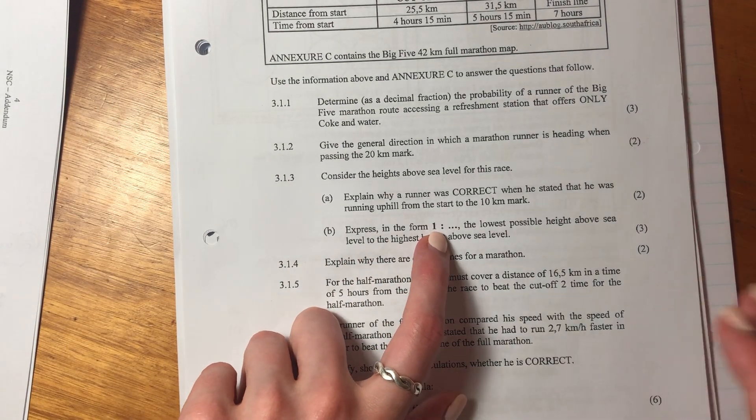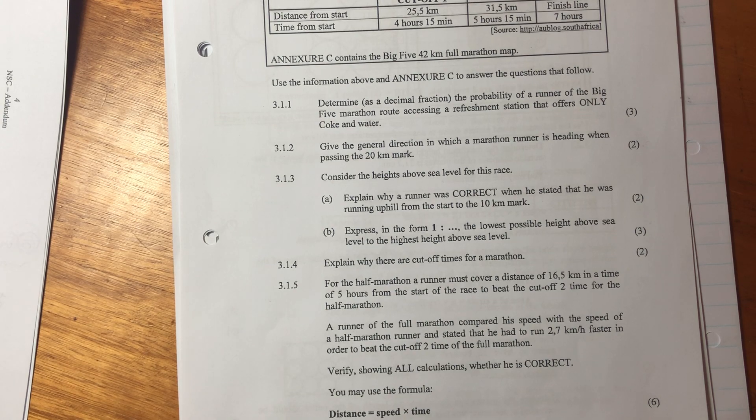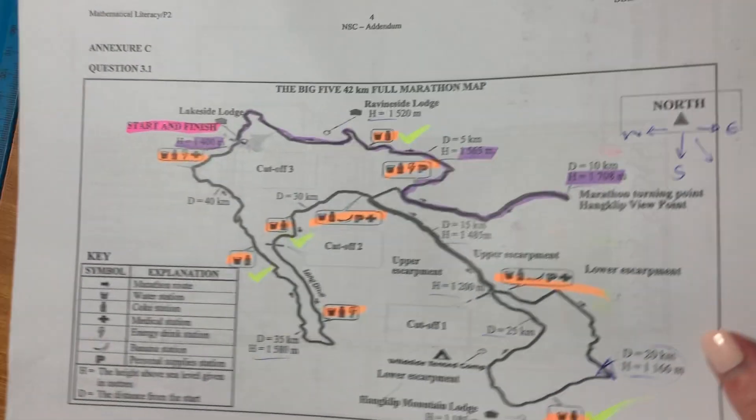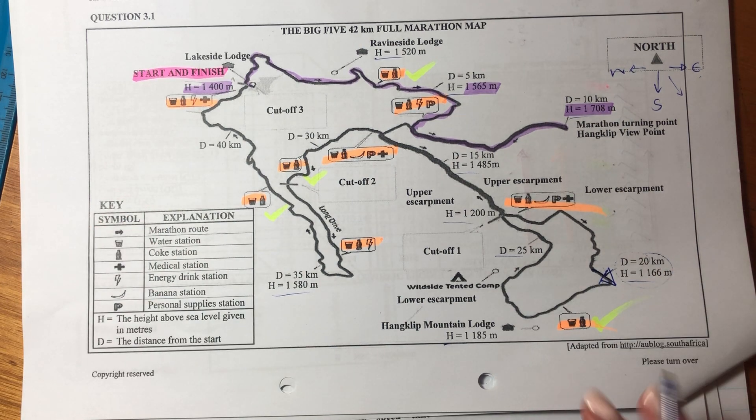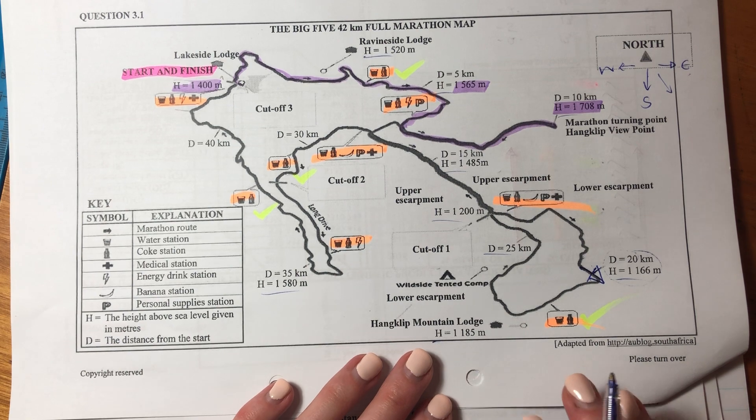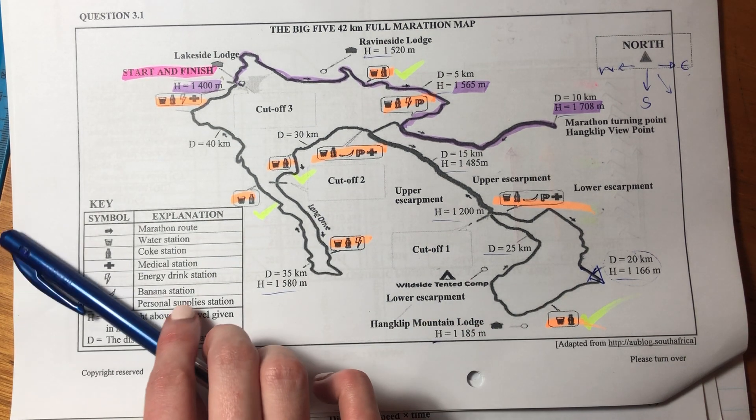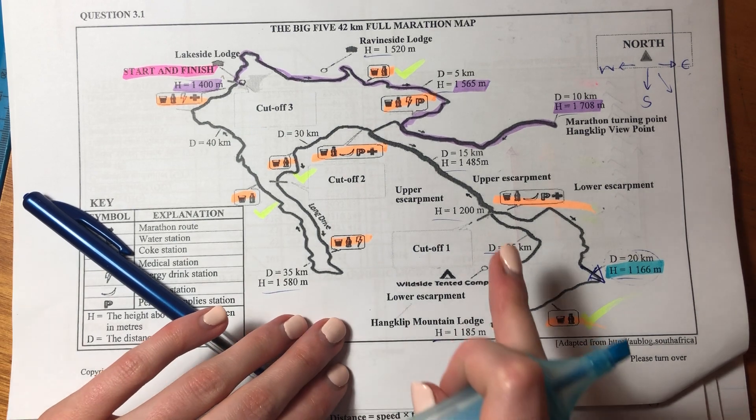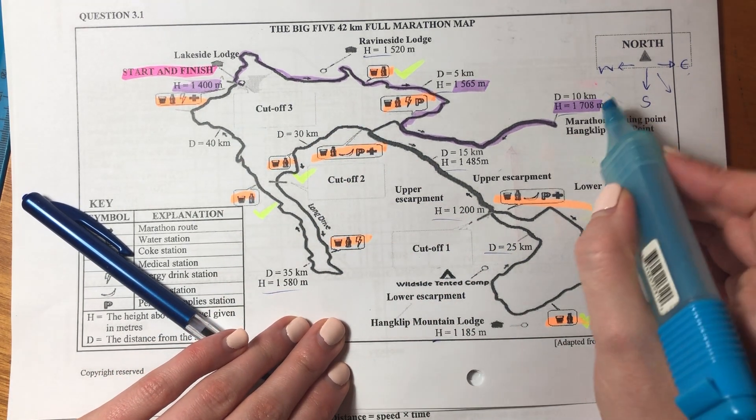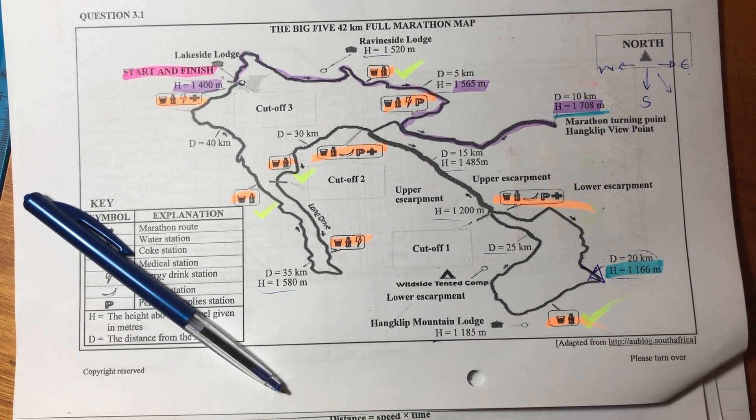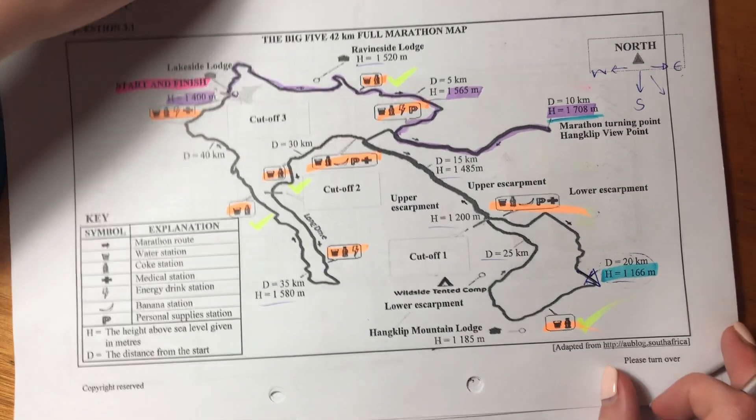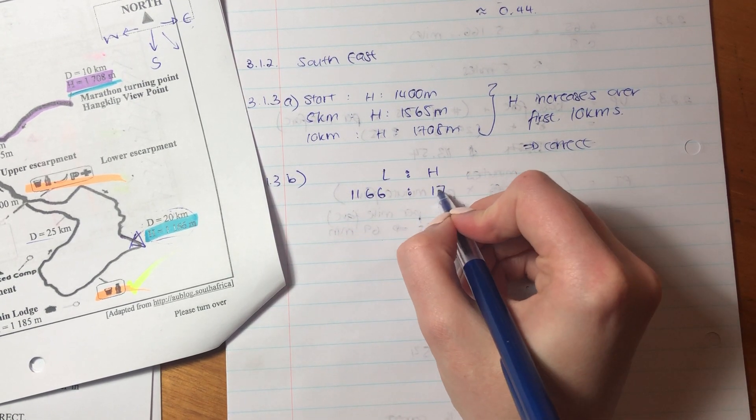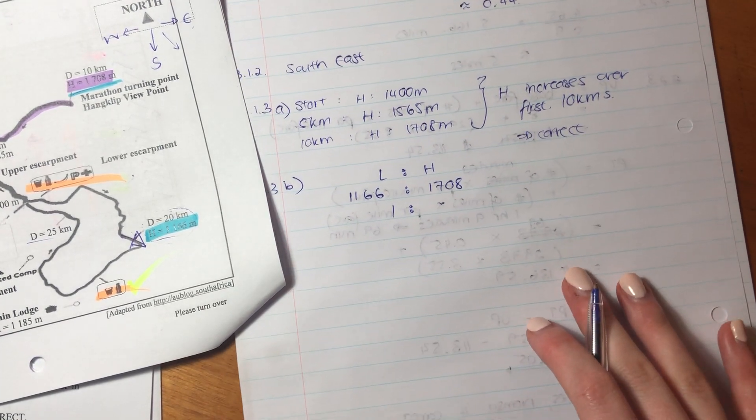So it says express in the form one to something, the lowest height above sea level to the highest height above sea level. They're wanting us to express it as a ratio. So let's find the lowest point on the map that we can possibly find height-wise. So I'm thinking the lowest point in the map, and I'm just going to use blue now because it's nice to have some color. So that's the lowest point in the map that I'm seeing. See if you can see anyone lower. I don't see anyone lower. And I see that this is pretty much the highest one over here. So now we have the lowest to the highest.